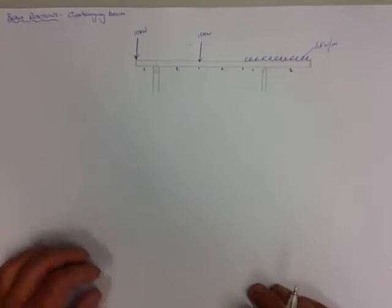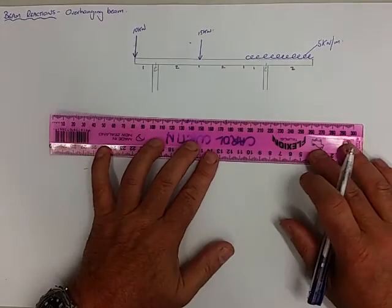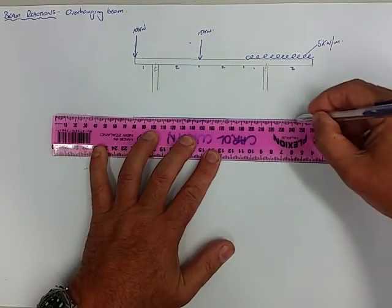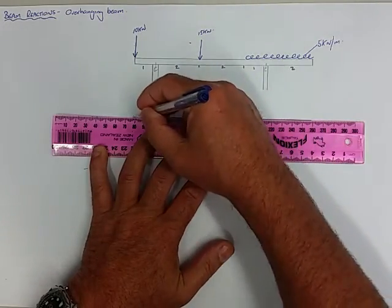So as with the simply supported, I'm just going to redraw that and simplify some of the information. And this also helps with my understanding of the problem.